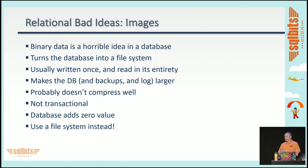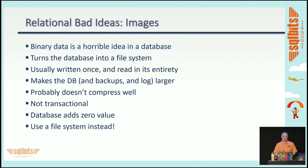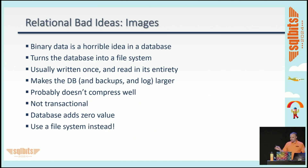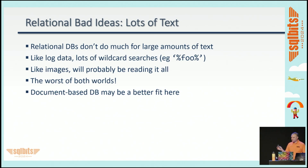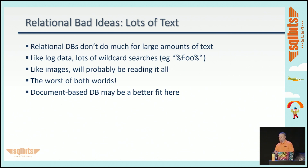Images are also a bad idea for relational databases — you're basically turning the database into a file system. Images are read in their entirety; you can't read part of an image. They blow up the size of the database, don't usually compress well, and aren't transactional. There's no real value to storing images in a database — use a file system instead. Similarly, large amounts of text are a poor fit: you'd be doing lots of wildcard searches, reading documents in their entirety. This is where a document database may be a much better fit.